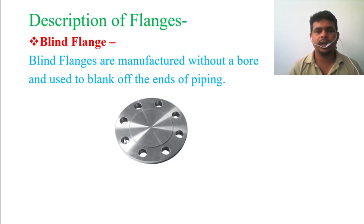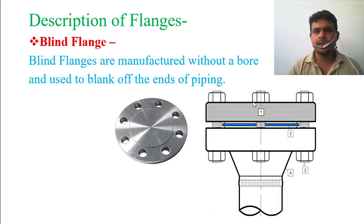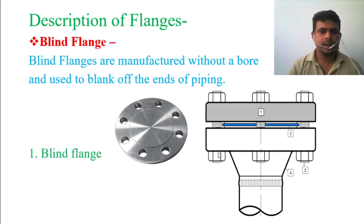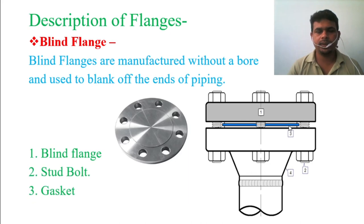If you need to blind a pipeline, or if you want to perform testing on a pipeline, you need to blind both ends or multiple locations before testing can be done. This type of flange is used for that blinding purpose. In the figure, number one is the blind flange. To use it, you need two flanges — the blind flange and a pipe flange. You also need a gasket in between to prevent leaks, and you use stud bolts or hexagonal bolts with nuts. Number two is the stud bolt, number three is the gasket, and number four is the other flange.